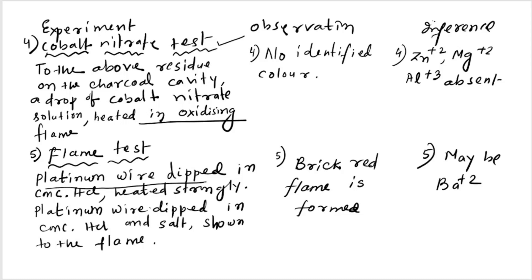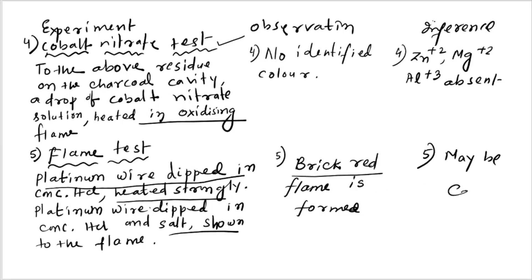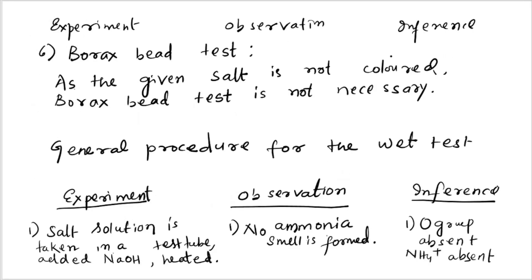After that we proceed to the flame test. A platinum wire is dipped in concentrated HCl, cleaned, heated strongly, then dipped in concentrated HCl again, touched to the salt, and shown to the flame. A brick red color is formed — brick red flame indicates calcium, because barium gives a light green color. So it may be Ca²⁺.